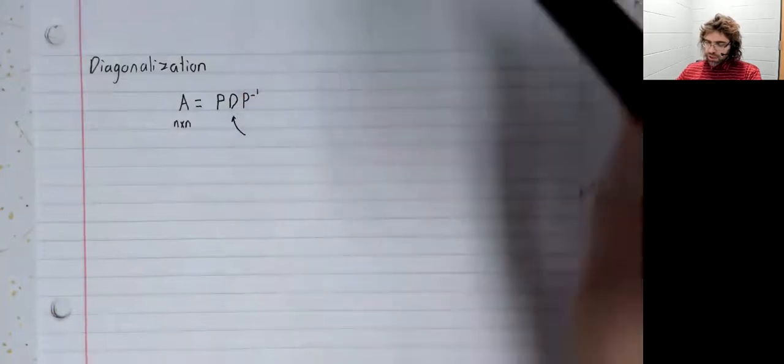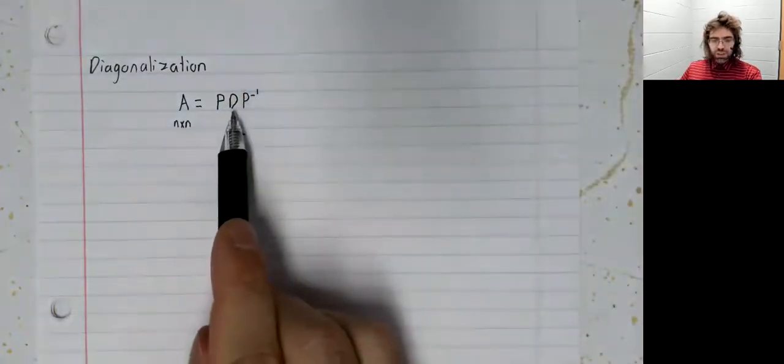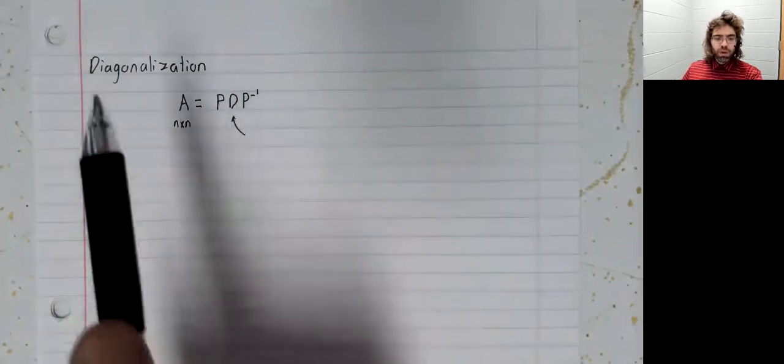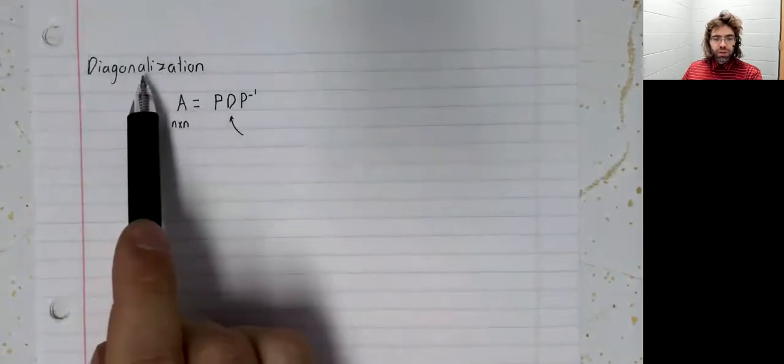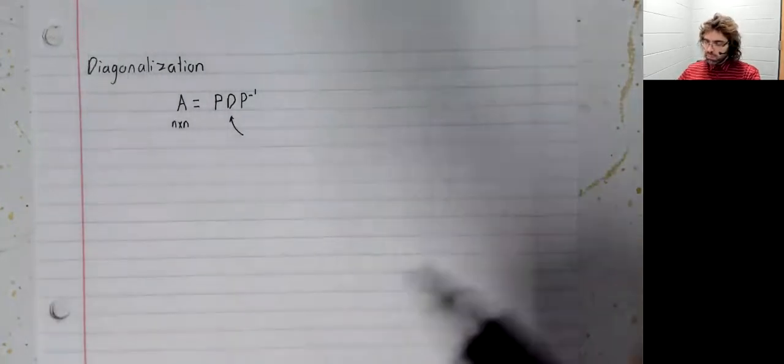Of these three matrices, the center one needs to have a special form. And this form is where this word comes from.